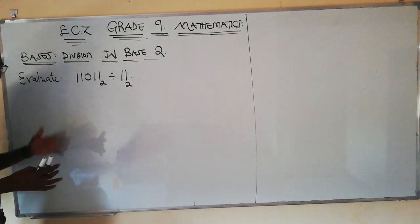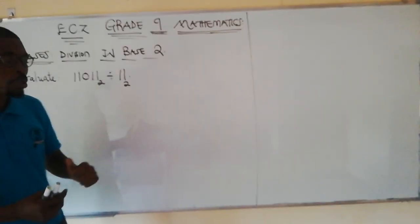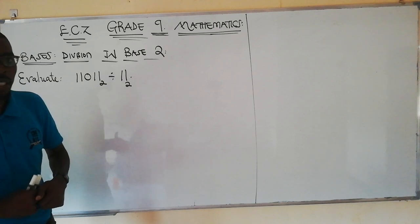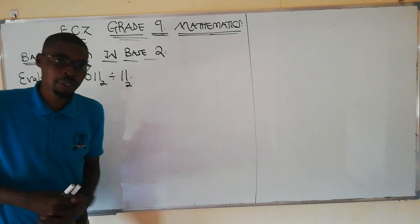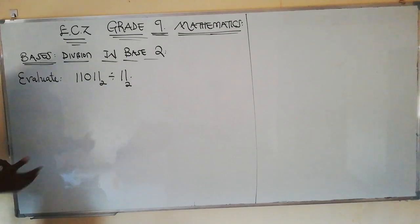The second concept is when we are borrowing in base 2, we borrow in 2s. We don't borrow in 10s like we do when we're in base 10, but in base 2 we borrow in 2s, as shown in this particular example.